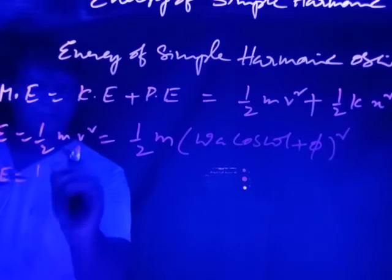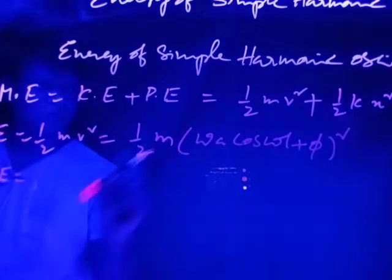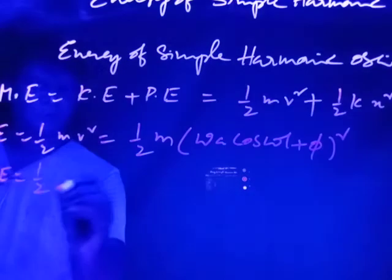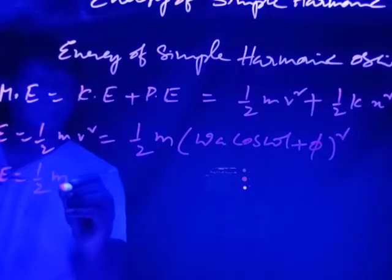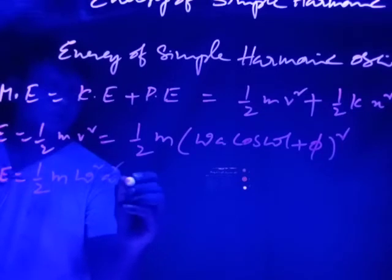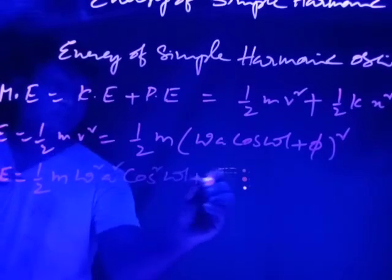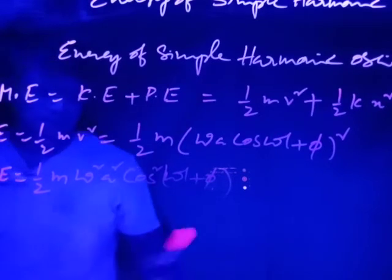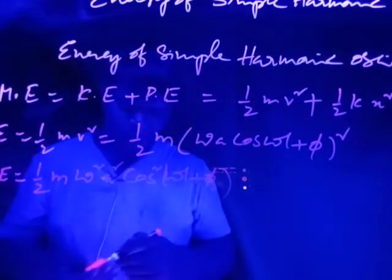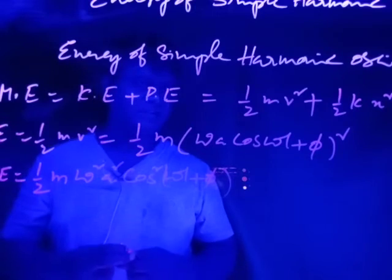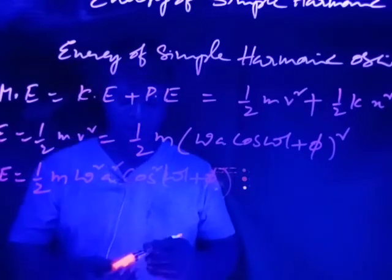Therefore, the kinetic energy becomes KE = ½m·ω²A²cos²(ωt + π). Next, we consider the potential energy equation.